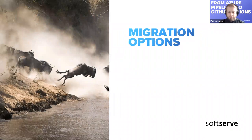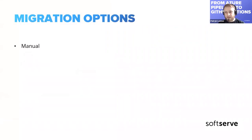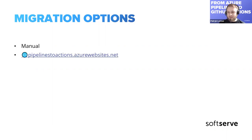Now, hopefully the most interesting part: migration options. How can you migrate from Azure Pipelines to GitHub Actions? Of course, as I mentioned, you don't need to — Azure DevOps is still a valid option. But if you want to, what can you do? You can do it manually. You might say you came to a presentation about migration and 40 minutes in the guy says do it manually — that's probably not what you wanted to hear.